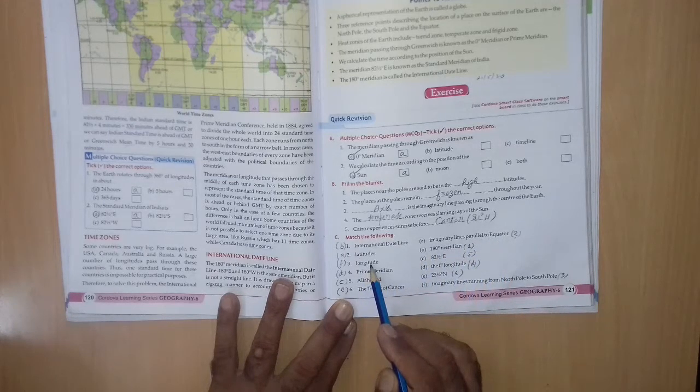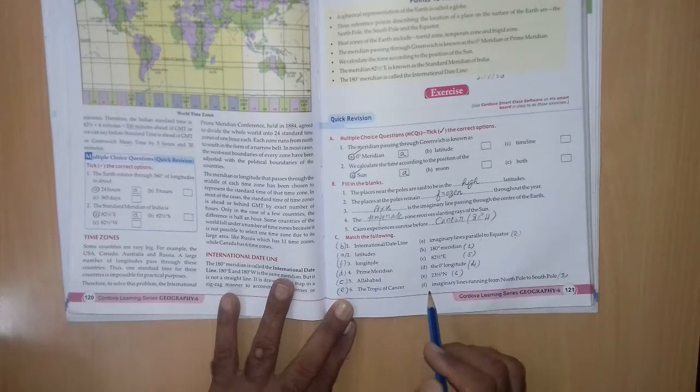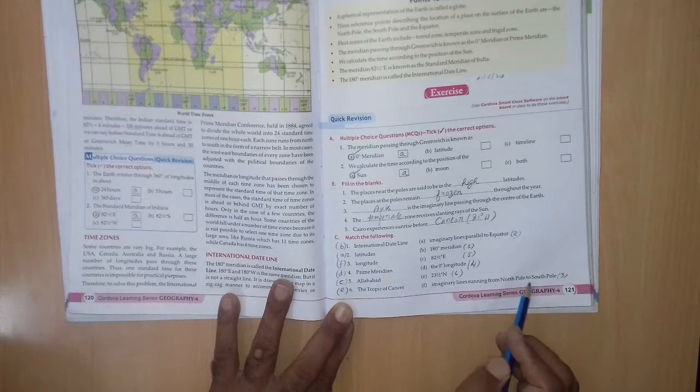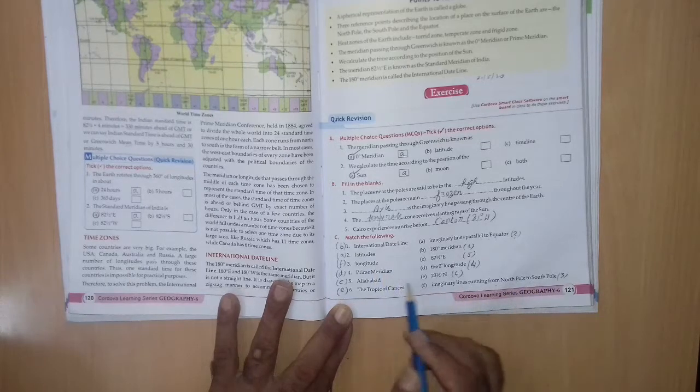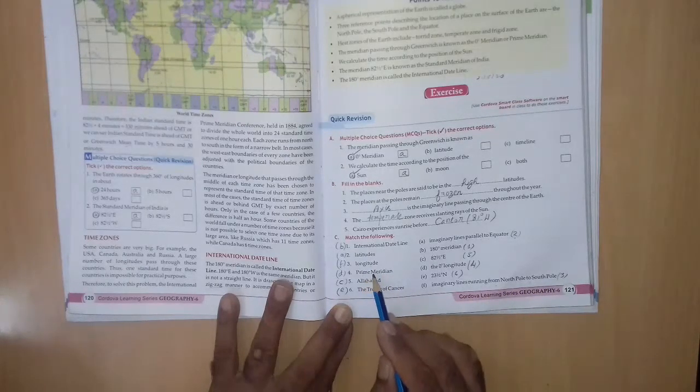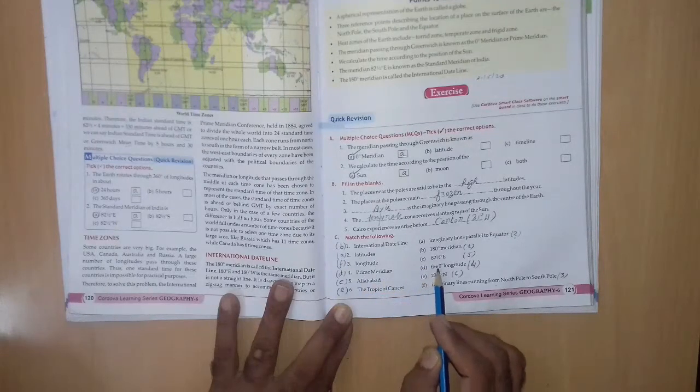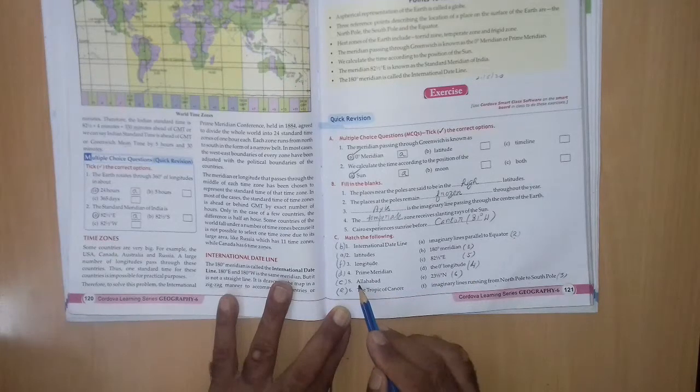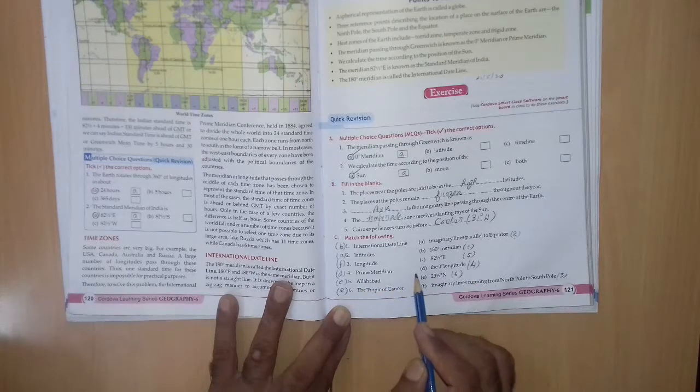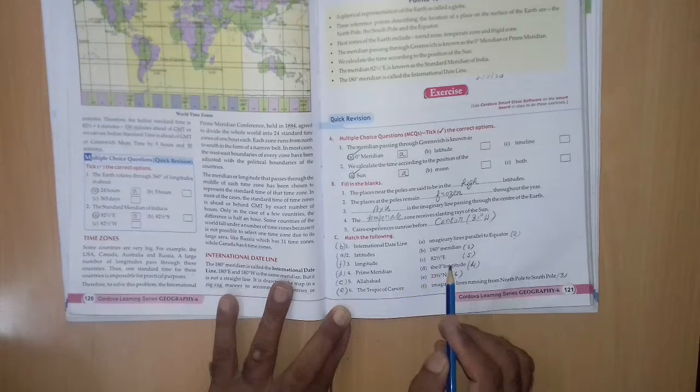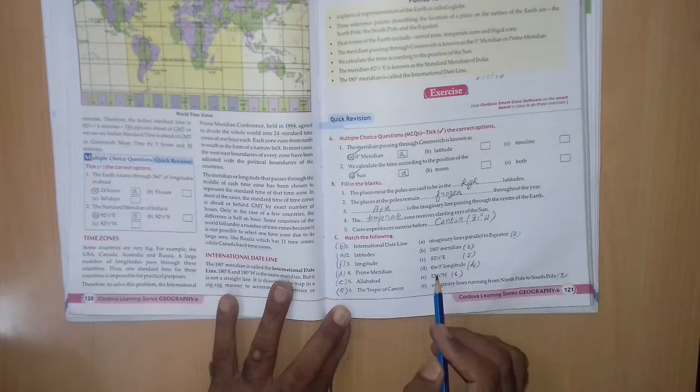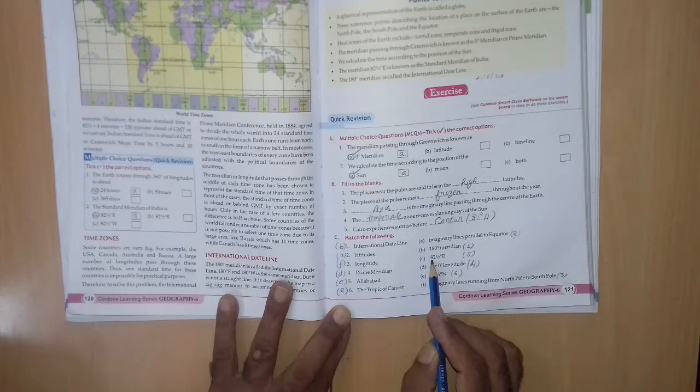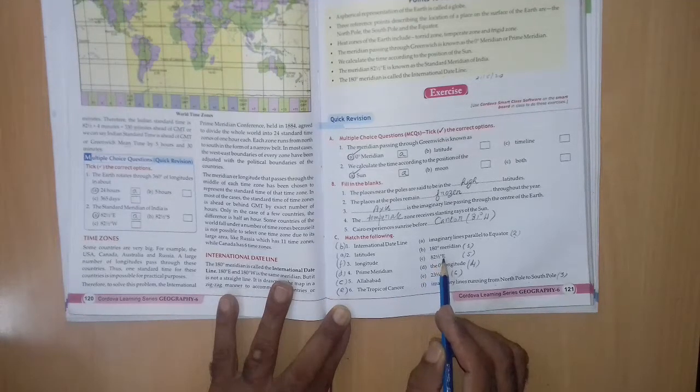3rd, longitude. Longitude, it is F, imaginary lines running from north pole to south pole. Next, 4th, prime meridian. It is D, 0 degree longitude. 5, Allahabad. It is Allahabad. It is 82 degree and half degree east, C.